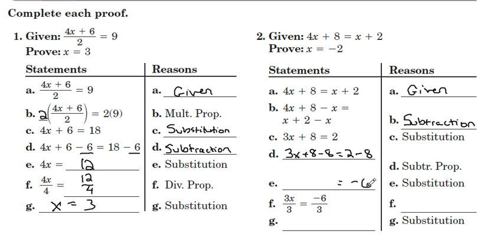2 minus 8 is negative 6. And then we're left with 3x here. So we did a substitution. We substituted one quantity for another. Looks like here we're doing division on both sides. Dividing both sides by 3. So that is the division property.